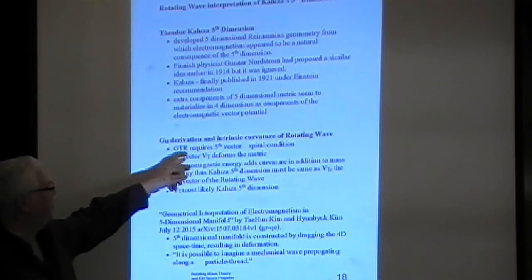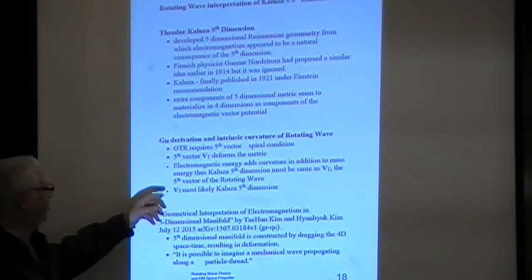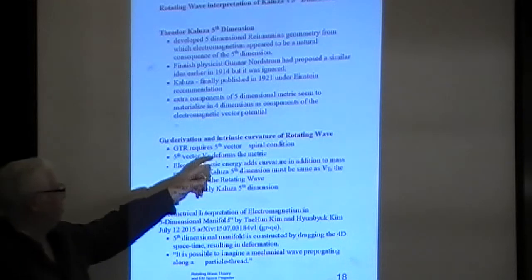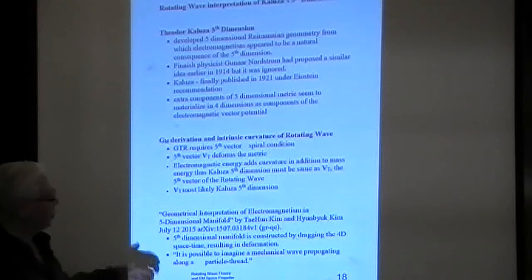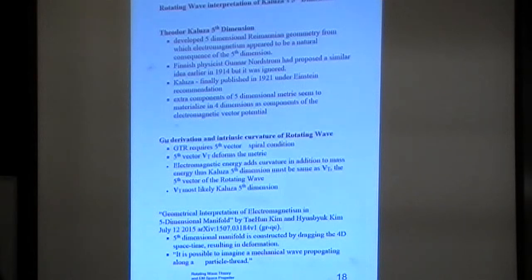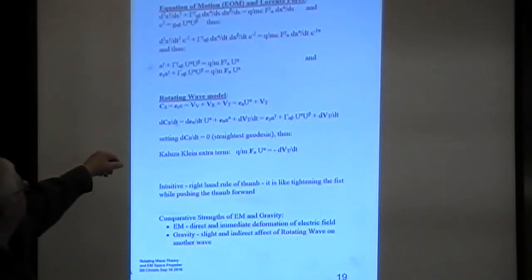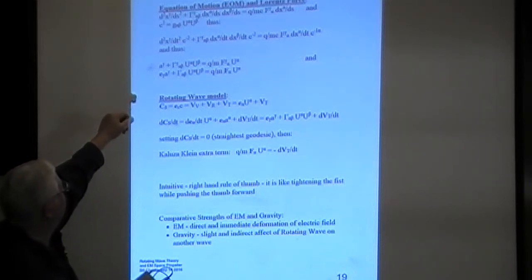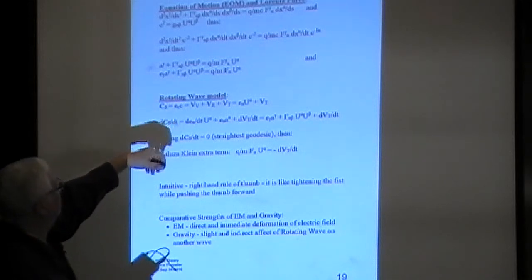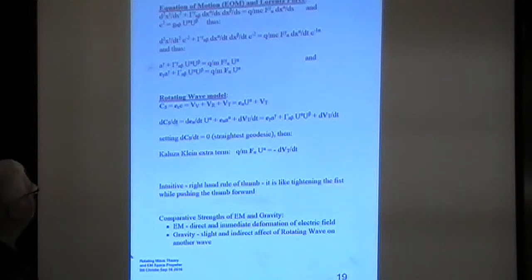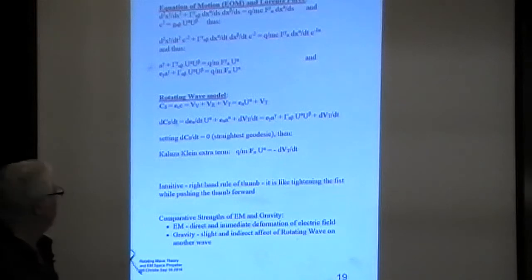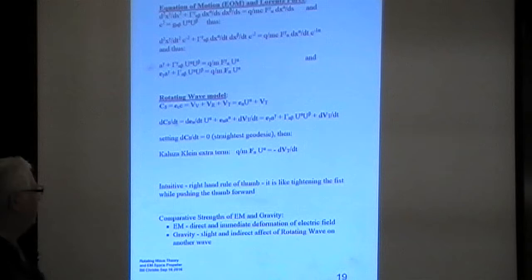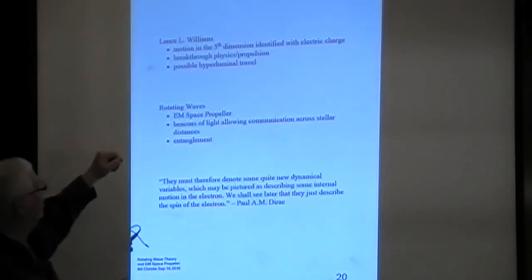You don't want to go through all this—we know what Theodore Kaluza did. The GKL derivation needs the VT, the fifth vector. I assumed, I gathered the VT is most likely Kaluza because the electromagnetic energy adds the curvature. The Kim father-son team from Korea, exactly a year ago, actually came up with the standard model with the same vector showing up, so that was inspiring. The equations of motion, the Lorentz force—it's easy to find that the fifth vector derivation relates to Kaluza. The force, we get the intuitive right-hand rule of thumb. Comparative strengths: EMs direct, gravity slight and indirect. Lance Williams, we talked about that, and that's why I'm here, I'm interested.